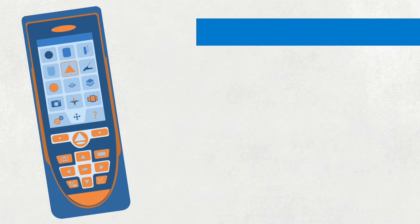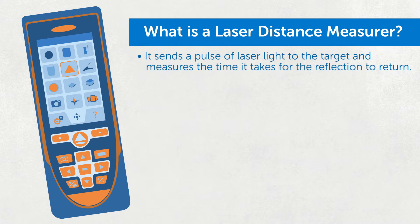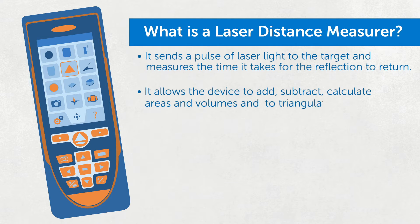What is a laser distance measurer? It sends a pulse of laser light to the target and measures the time it takes for the reflection to return. It allows the device to add, subtract, calculate areas and volumes, and to triangulate.